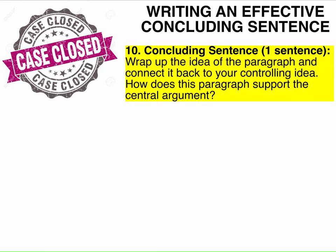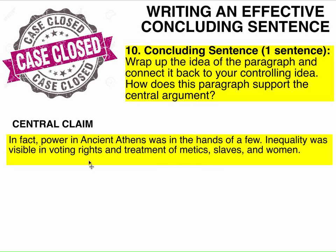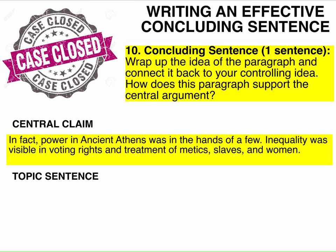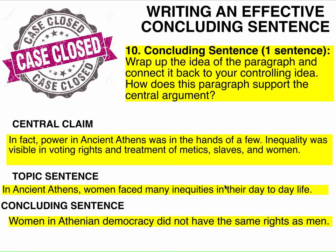Now on to your concluding sentence. I want you to pull out that central claim — every time you write a concluding sentence, topic sentence, or transition, look back at that central claim. My central claim is: 'Power in ancient Athens was in the hands of a few. Inequality was visible in voting rights and treatment of medics, slaves, and women.' My topic sentence was: 'In ancient Athens, women faced many inequities in their day-to-day life.' My concluding sentence wraps up both ideas: 'Women in Athenian democracy did not have the same rights as men.' It's short, sweet, and to the point.